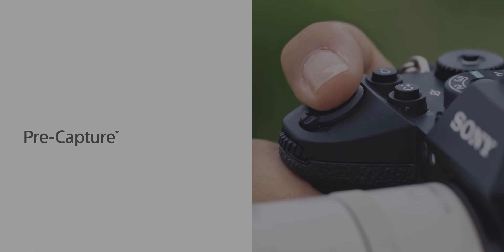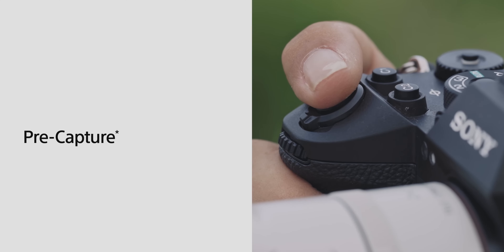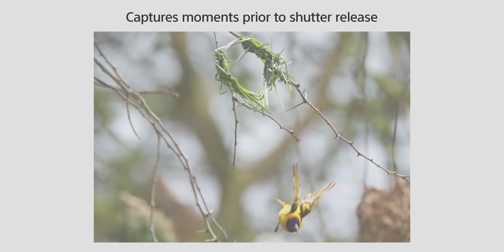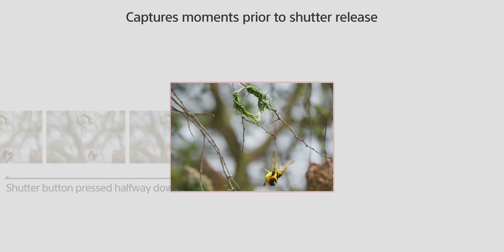The maximum burst rate shutter speed is 120 frames per second, which means you can capture 120 photos in one second - that is the fastest burst rate in any consumer camera. There is another interesting feature called pre-capture, which is the pre-buffer feature. When you half-press the shutter button, the camera will start clicking pictures immediately.